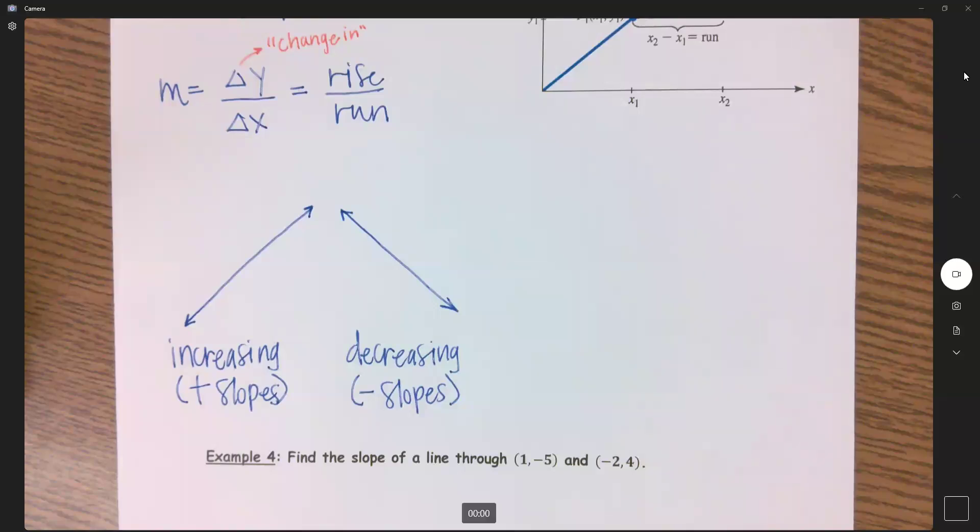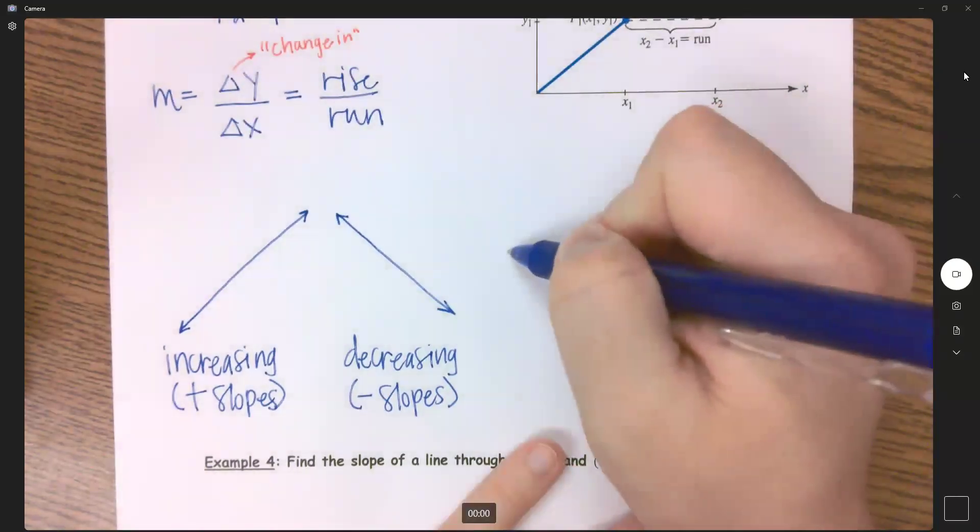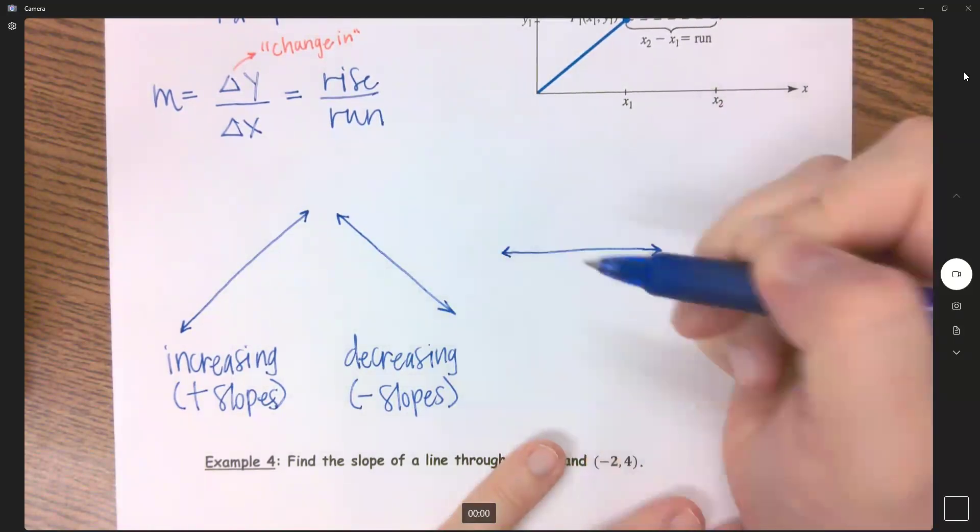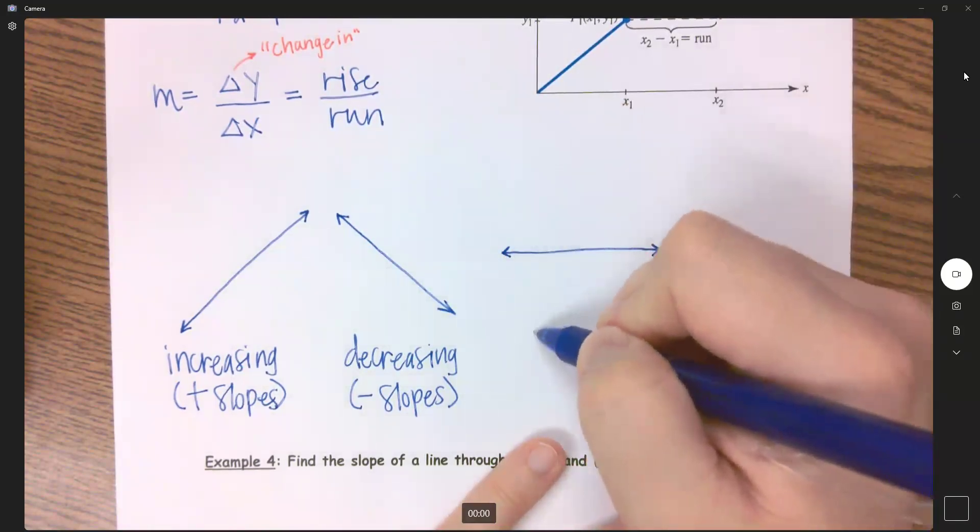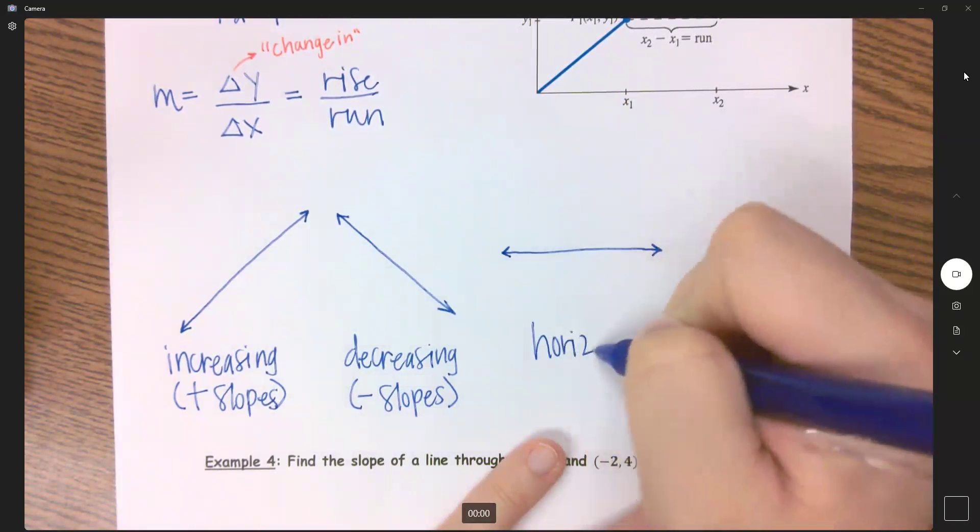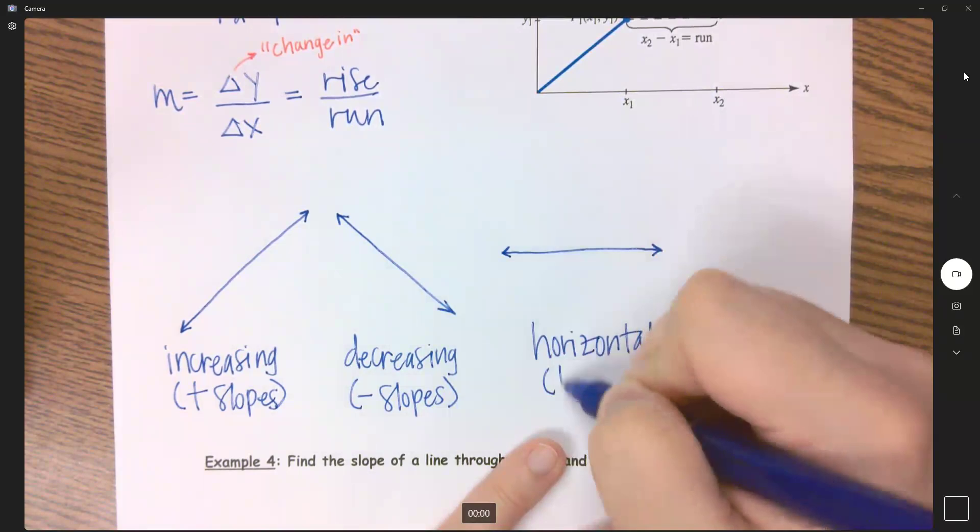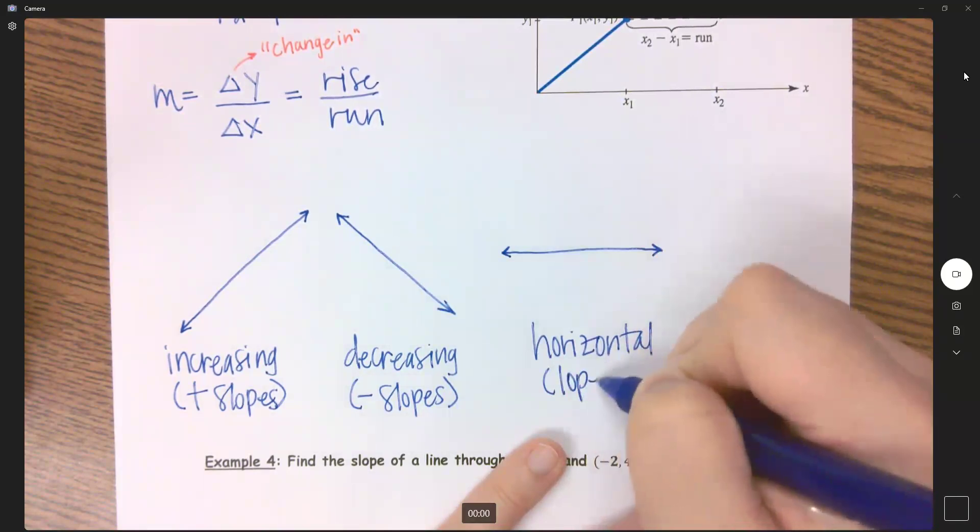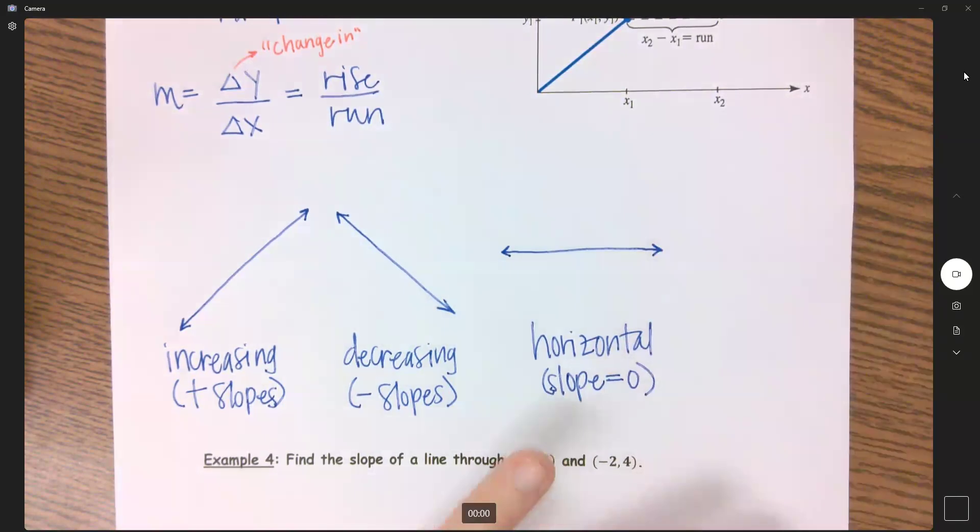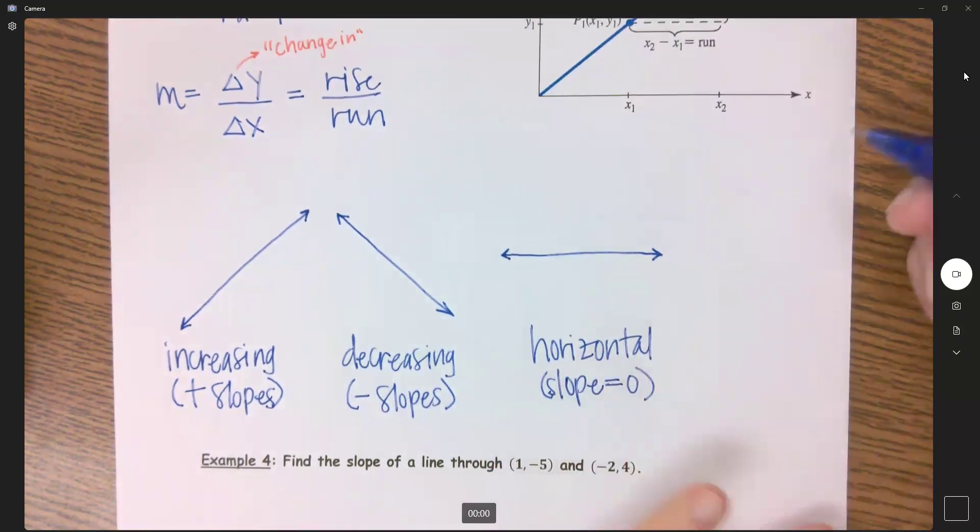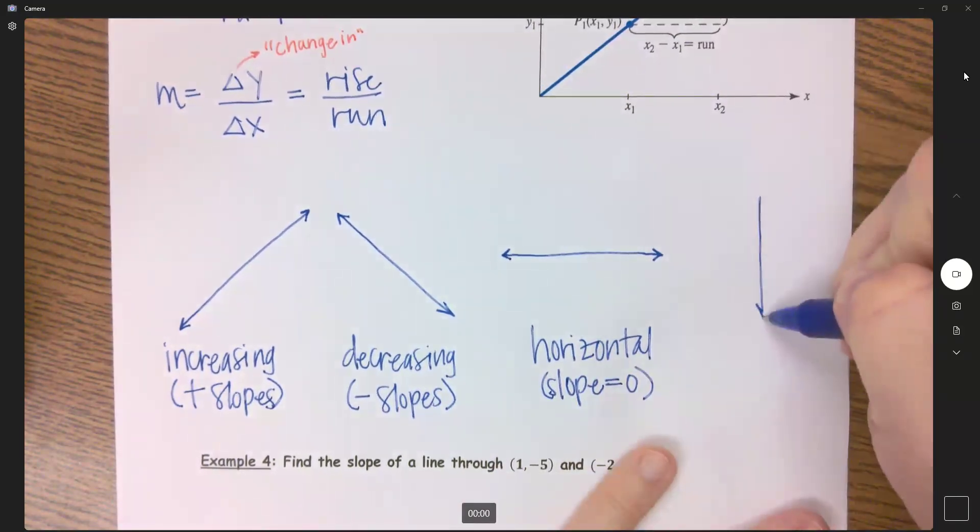Okay, what else can happen? We can have a horizontal line. And if we have a horizontal line, then this is a slope that equals zero. Now, the last one that we kind of sort of have, if I have a horizontal line, then I could have a vertical line.